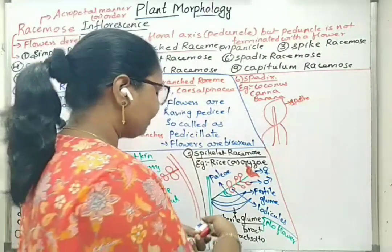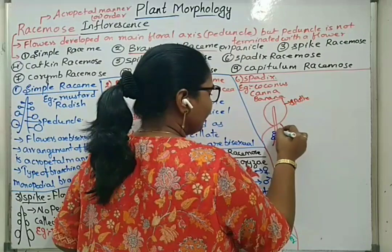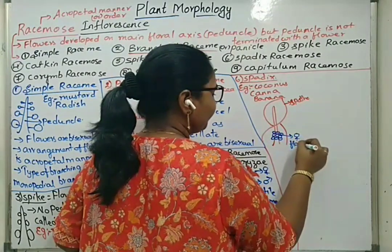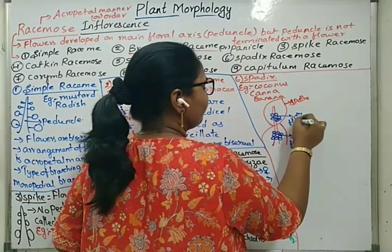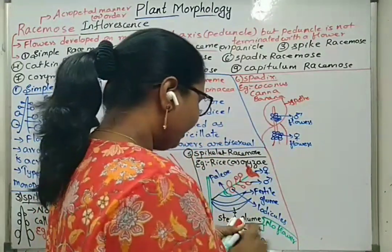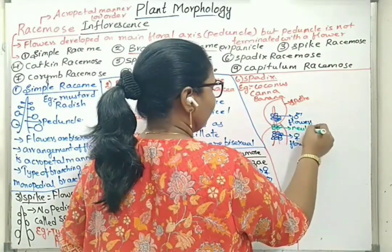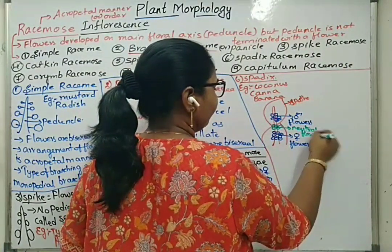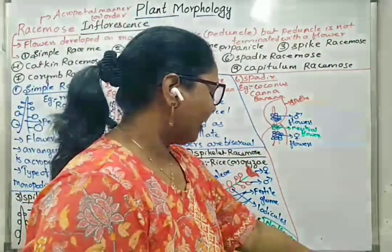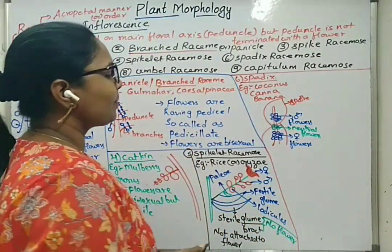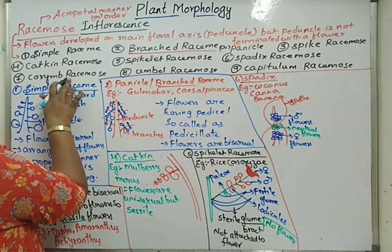At the bottom region will be female flowers, at the tip region will be male flowers, and the middle part will be neutral flowers. The modified bract is called the spathe, and the type of inflorescence is spadix inflorescence.